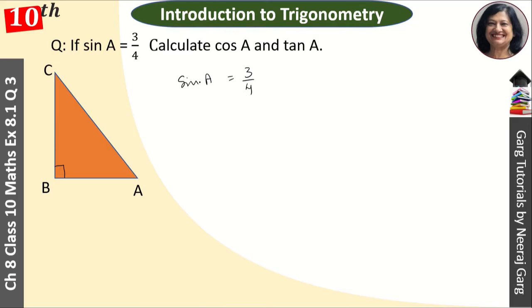Now, sin A equals perpendicular upon hypotenuse. Since this is a ratio, let the perpendicular or opposite side be 3K and the hypotenuse be 4K. So for angle A, the opposite side is 3K and the hypotenuse is 4K.